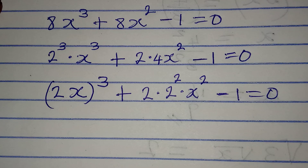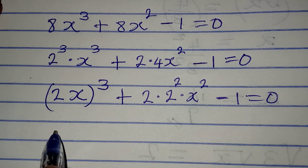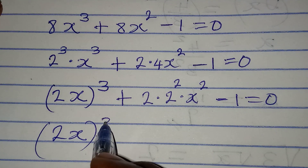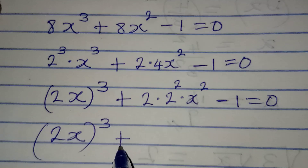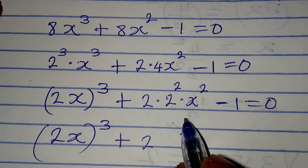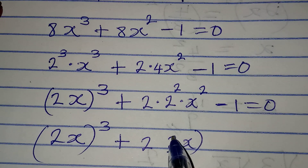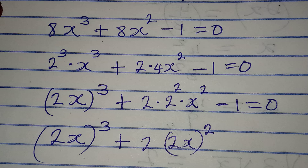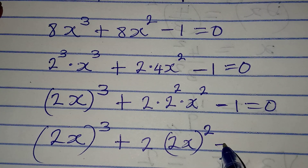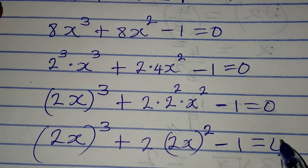I want to work on the middle term here. So we have 2x to the power of 3, then I'm going to combine so I have 2x both to the power of 2, because they are both having the same power. Then minus 1 equal to 0.